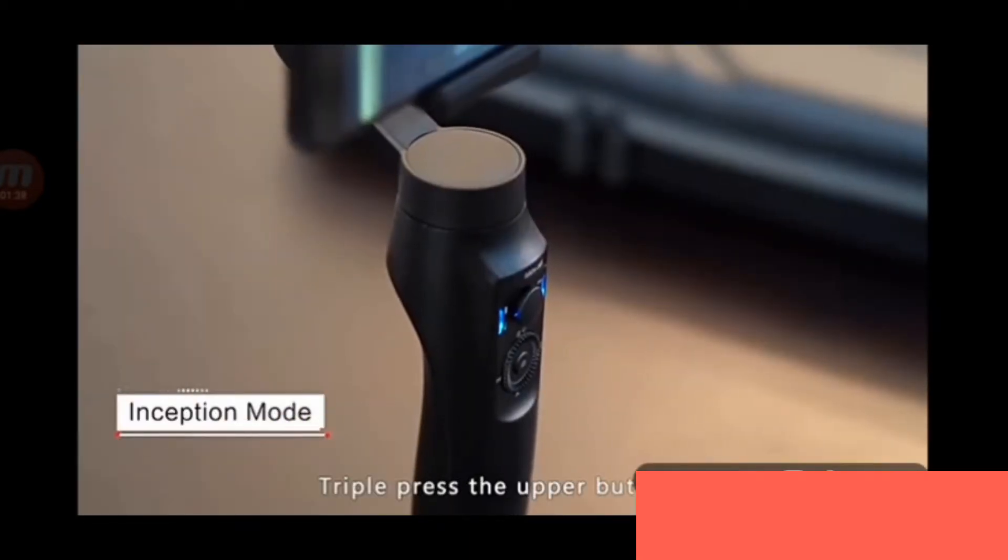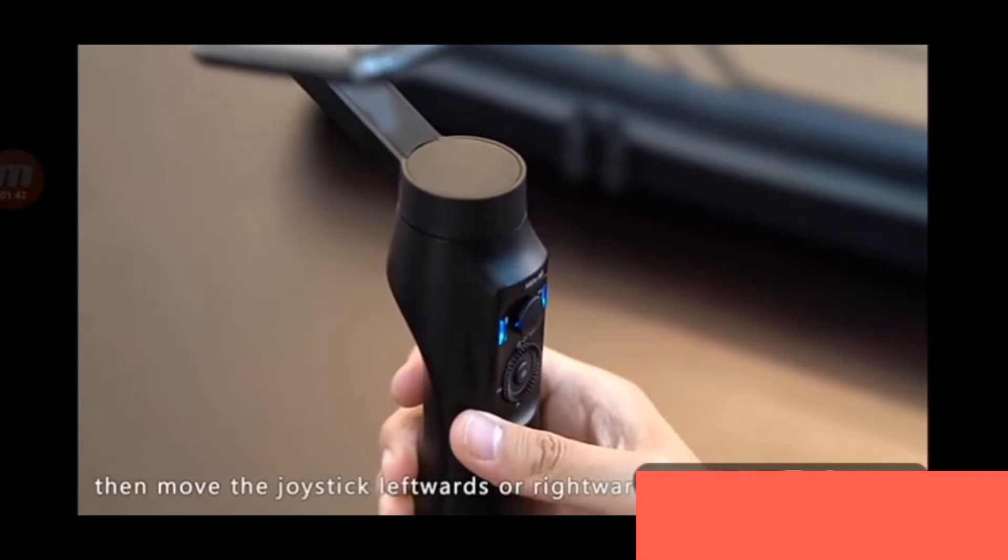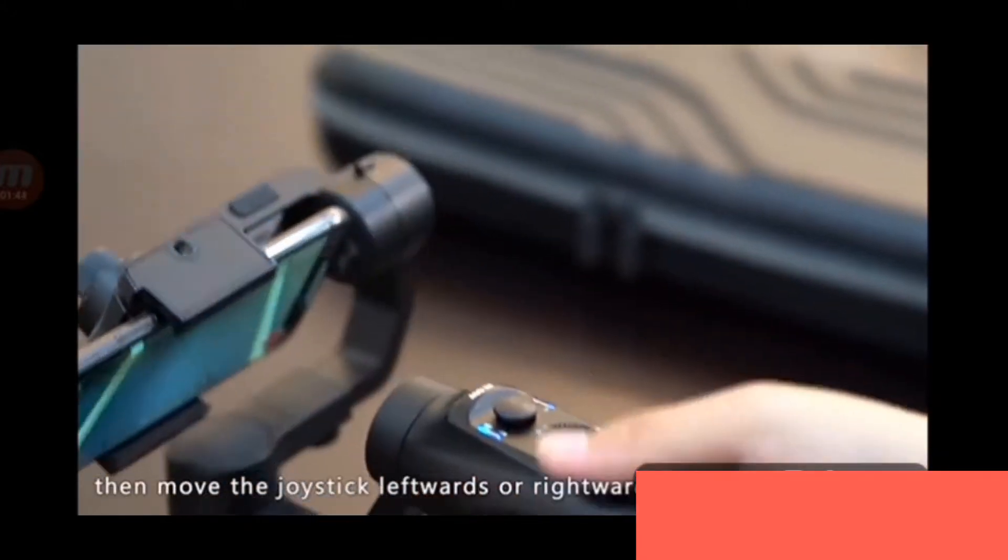Inception mode: triple click the upper button of the dial wheel to switch into Inception mode. Then move the joystick left or right to rotate the phone.